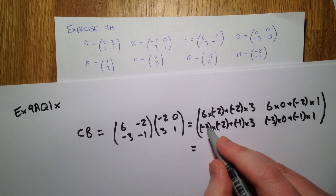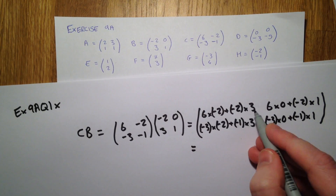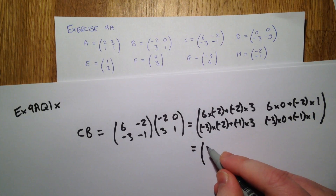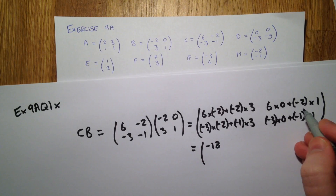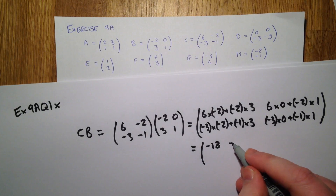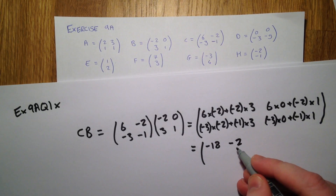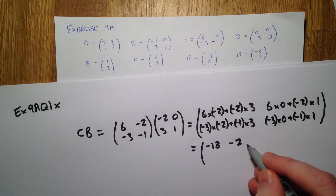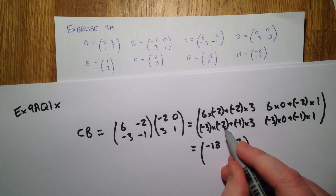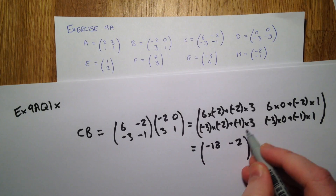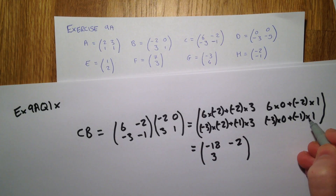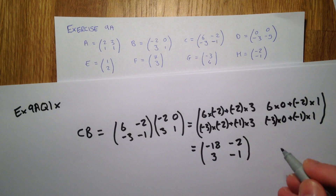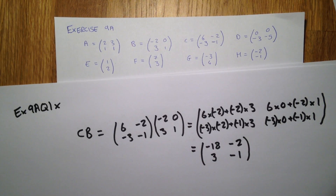So we've got negative 12 plus negative 6, equals negative 18. Zero plus negative 2. Six plus negative 3. And zero plus negative 1.